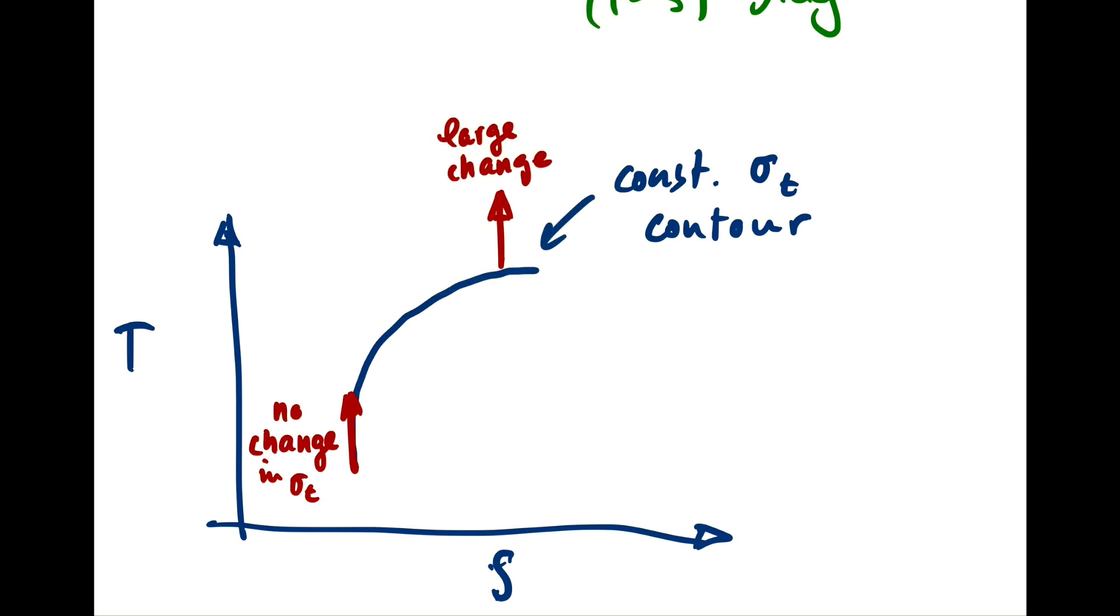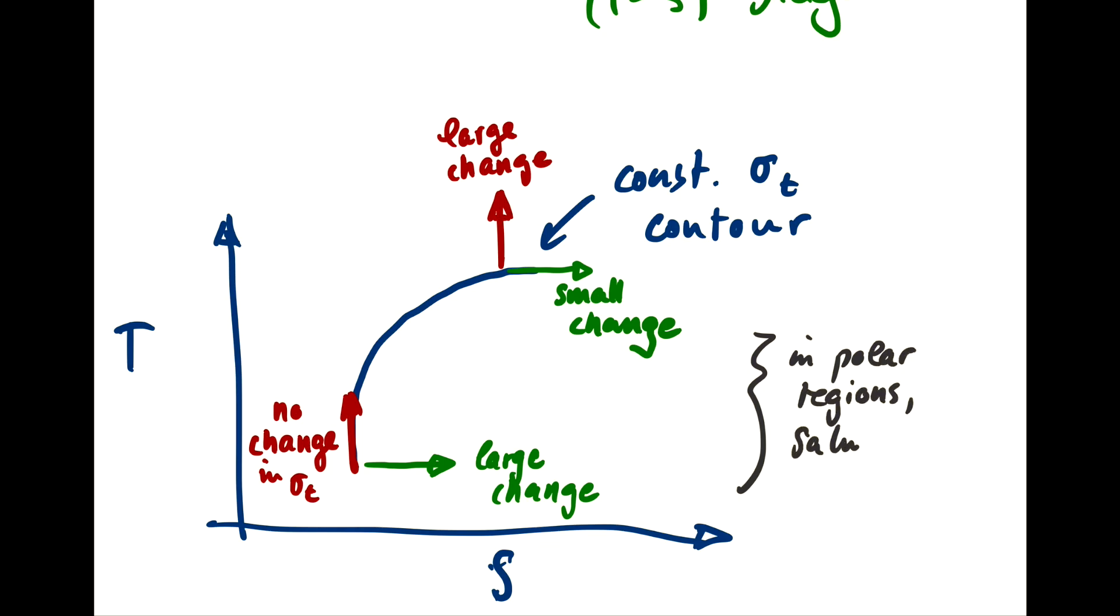Whereas for salinity, it's the opposite. If I change salinity by a given amount, I have a large change in density at low temperatures. Whereas for warm temperatures, if I change salinity, I have a small change. And as a result, in polar regions, salinity is very important for the vertical ocean structure.